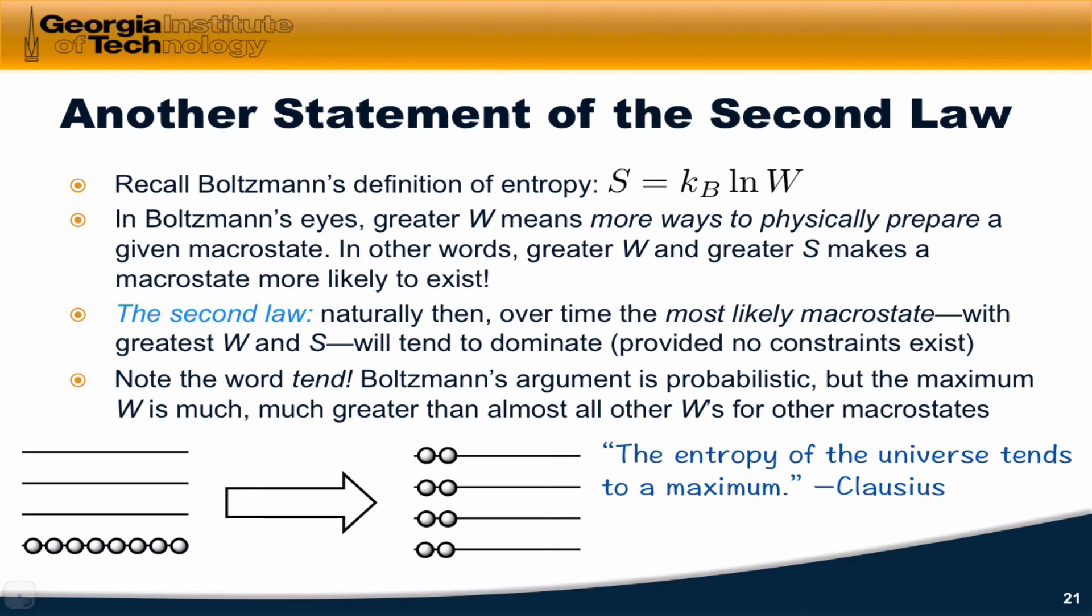He noticed that within isolated systems, such as the universe, entropy tends to increase until it reaches a maximum, at which point the system is in a state called equilibrium. We'll have much more to say about equilibrium in a future series of videos.